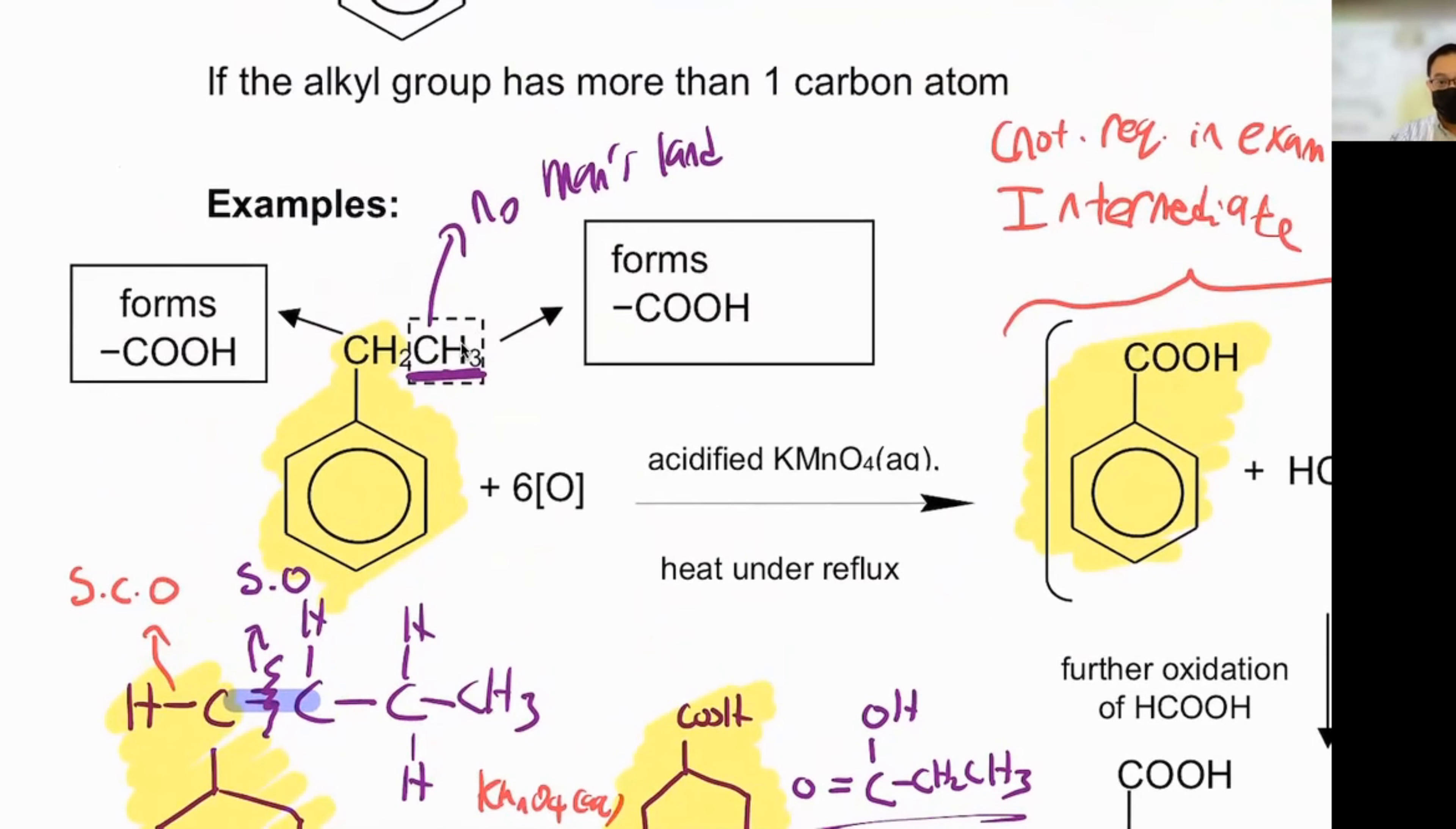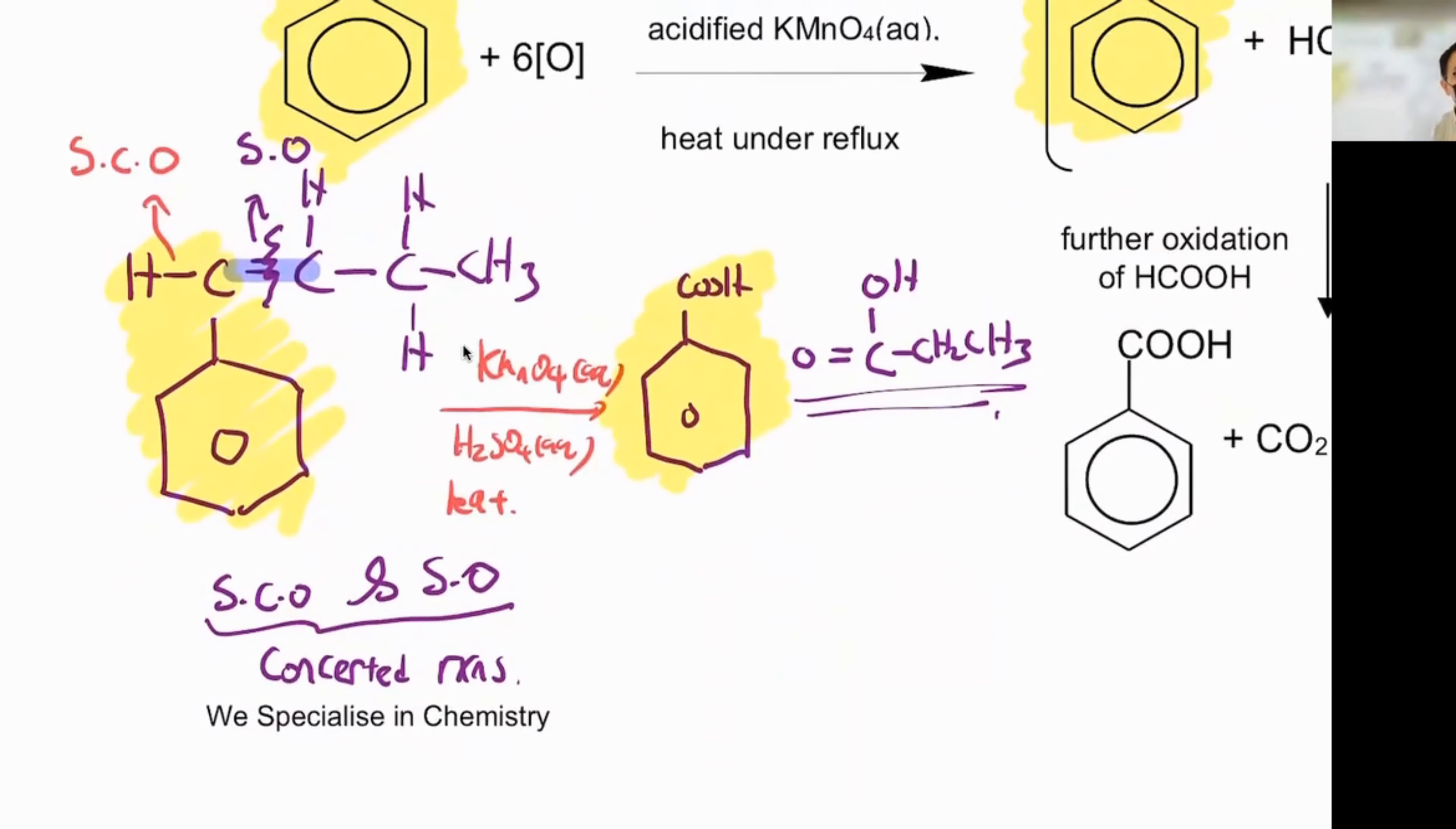It becomes CO2 and H2O. So there's a difference between concerted and non-concerted reaction. So because it's a concerted reaction, it takes place together. No reaction has a vantage. Hence this group, which has become the acid.